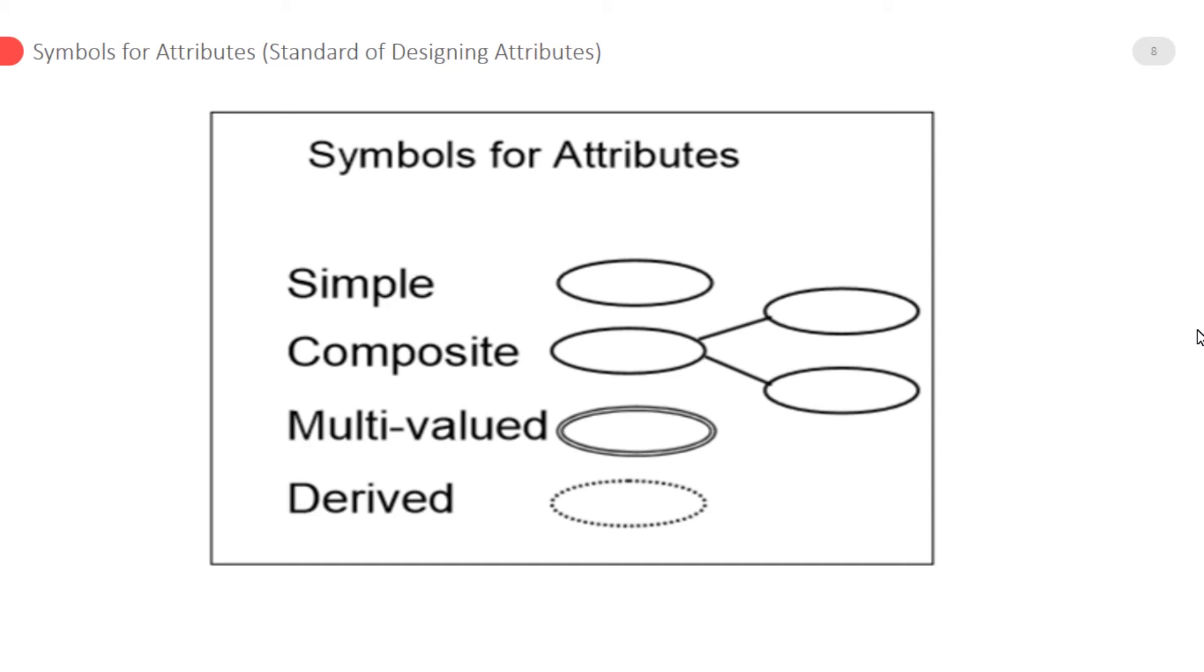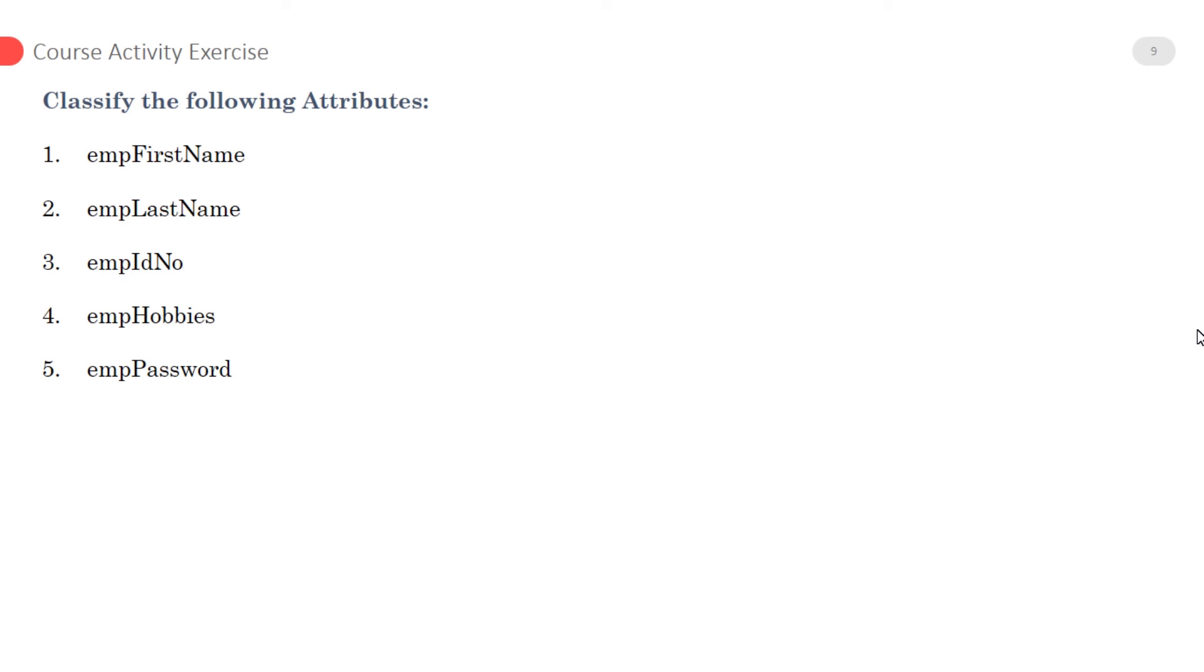Examples. Symbols for attributes: simple attribute is denoted by oval shape, multi-valued attribute is denoted by double oval shape, derived attributes are denoted by dotted oval shape.